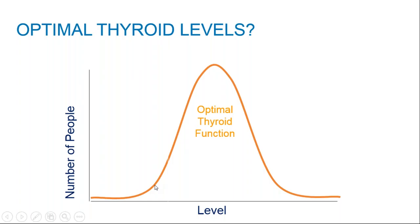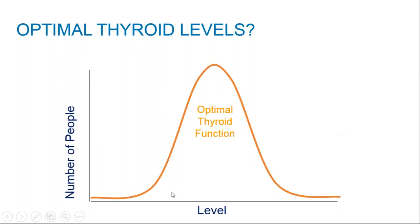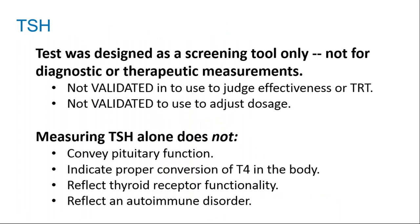Normal lab ranges cut off the extremes but still include people well away from the center — people whose odds of feeling good are low. So I take any lab's normal range for total T4, free T4, and free T3, cut 25% off each end, and call that the 'optimal' range. That middle 50% is what I refer to as optimal thyroid function.